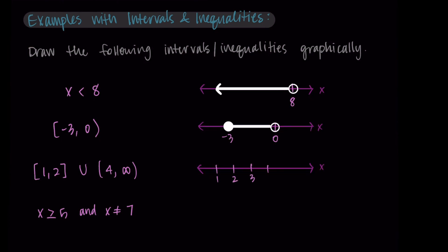This next one looks more complicated — it has a union symbol. We're looking at the interval between one and two, and the interval from four to infinity. The square brackets tell me to use filled-in circles at one and two, with a solid line in between. Then for the second interval from four to infinity, I use an open circle at four because of the parenthesis, and draw an arrow going to the right toward positive infinity.